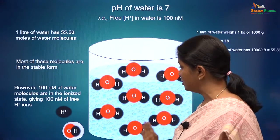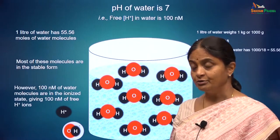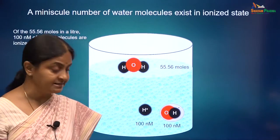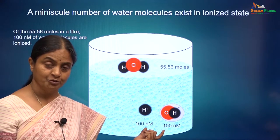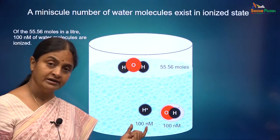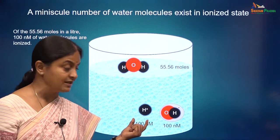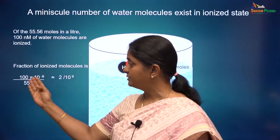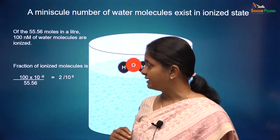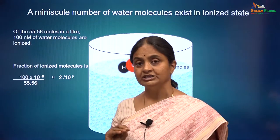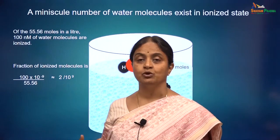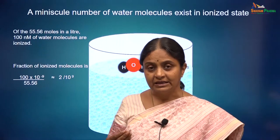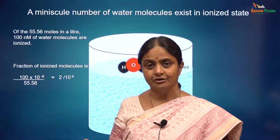We will now see what proportion of the stable water molecules is made up of the ionized water molecules. Those are the stable water molecules, and a very small amount — 100 nanomoles — are in the ionized state, giving 100 nanomoles of free hydrogen ions, which keeps the pH of water at 7, and an equal amount of free hydroxyl ions. The fraction of ionized molecules would be 100 nanomoles over 55.56 moles, giving us a little less than 2 ionized water molecules for every billion stable water molecules. A minuscule number of water molecules exists in the ionized state, giving a minuscule concentration of free hydrogen ions in solution.